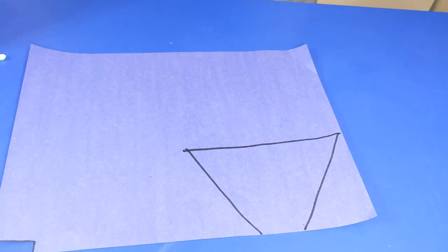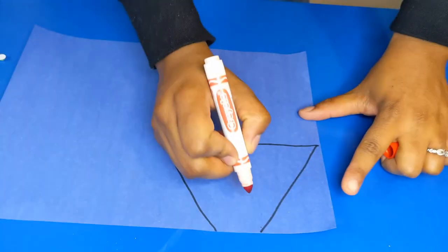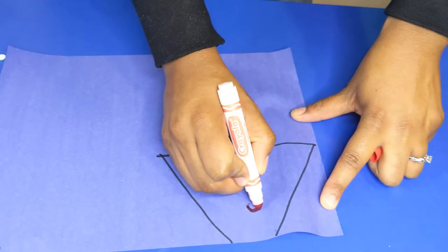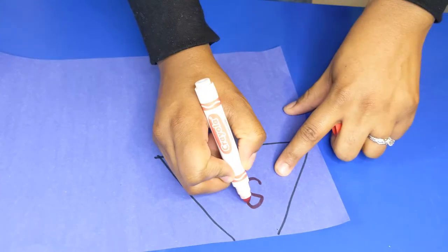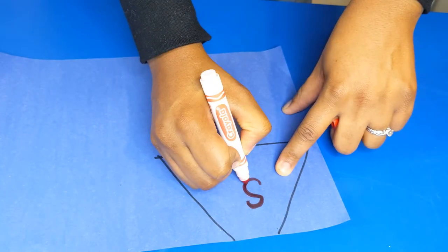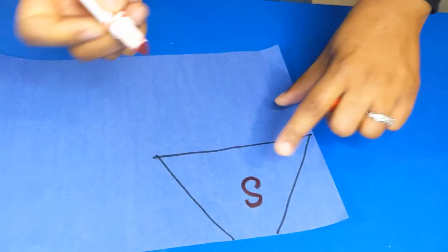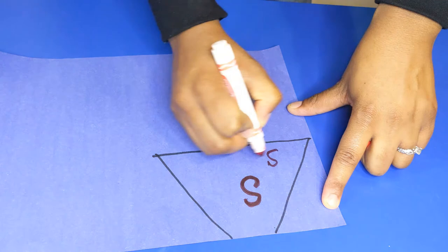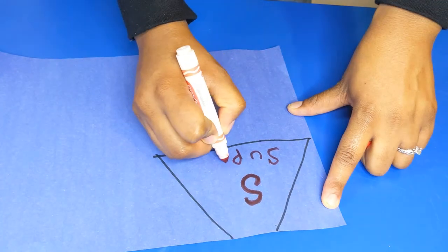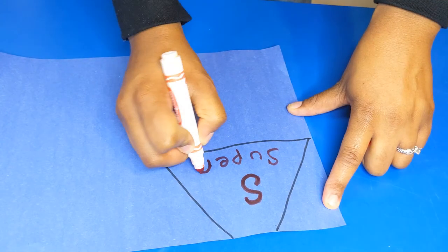I think for my superhero I'm also going to draw on his cape. I'm gonna use a red marker to make a red S for a superhero. And, yes. Look at that. And I'm gonna write Super S-U-P-E-R.